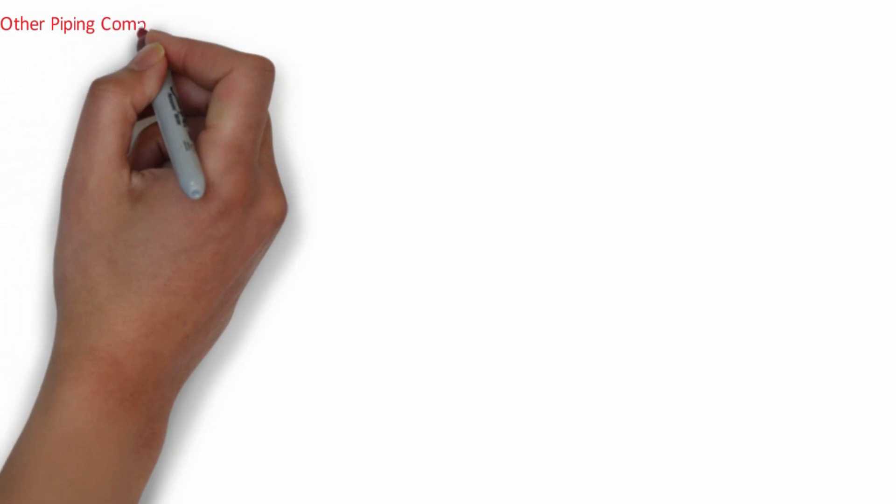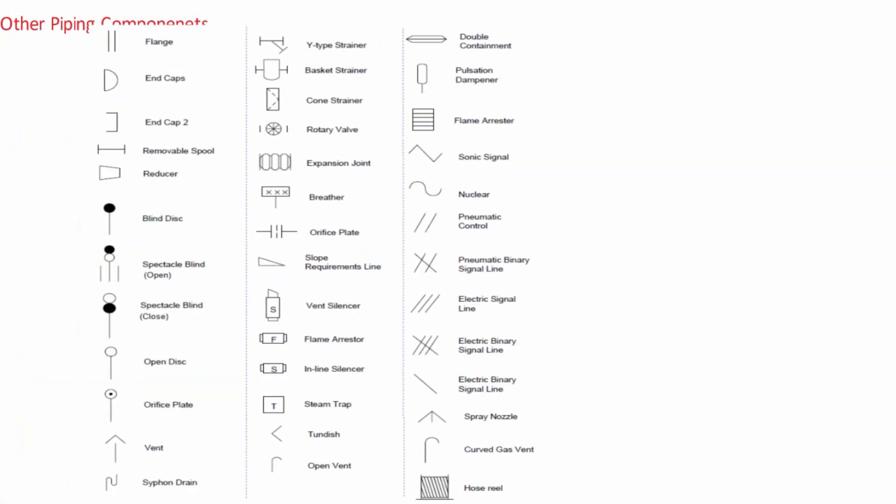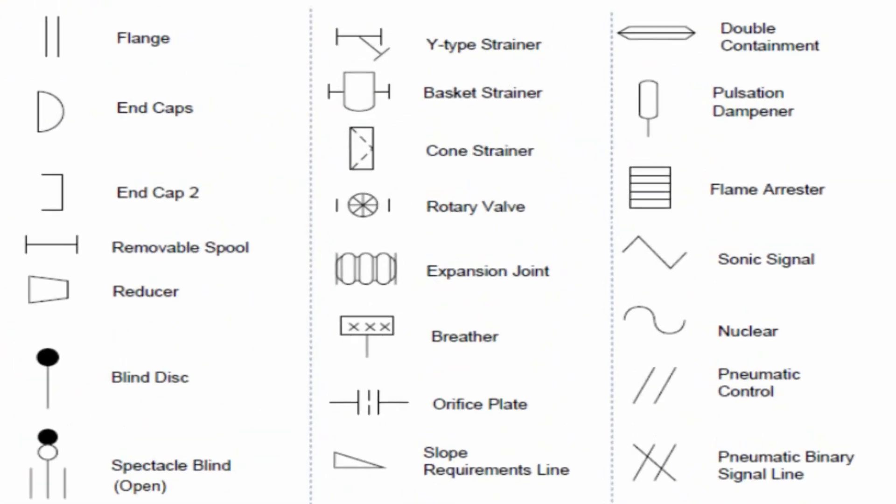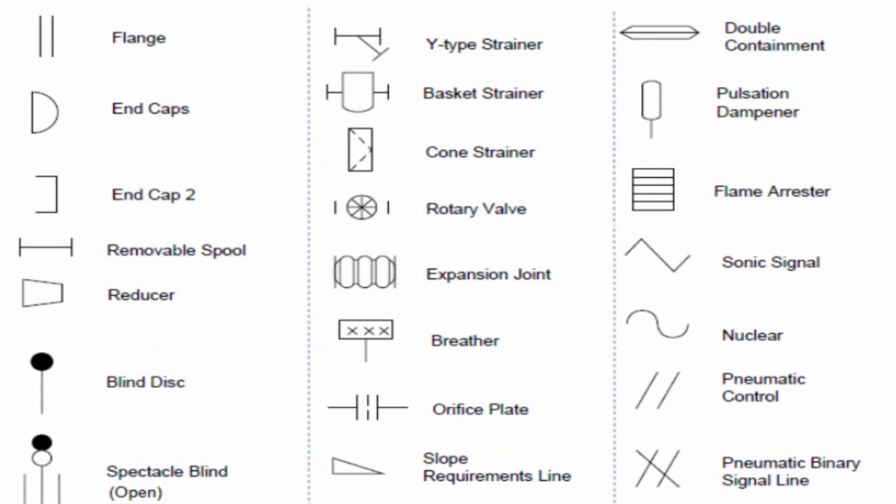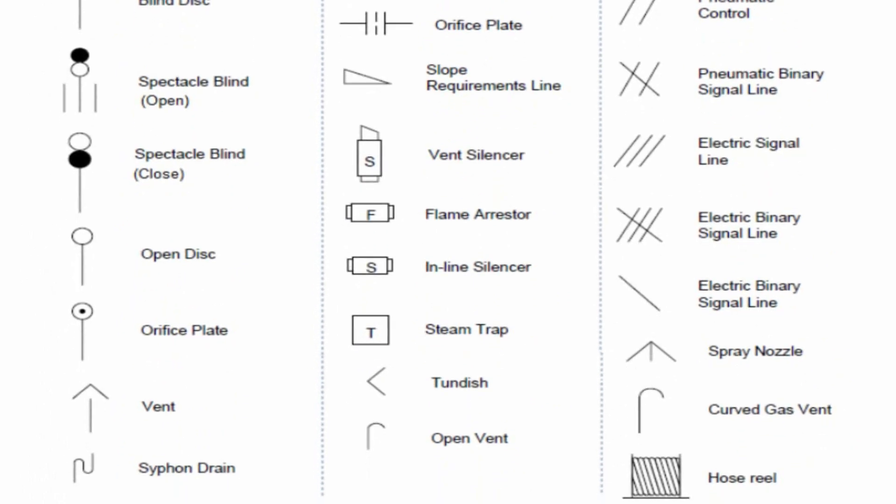The next picture shows the graphical representation of almost all other piping components used to provide adequate information of the concern line without having to refer a lot of individual documents. Please keep in mind that these are general symbols and these may vary from project to project in reality.